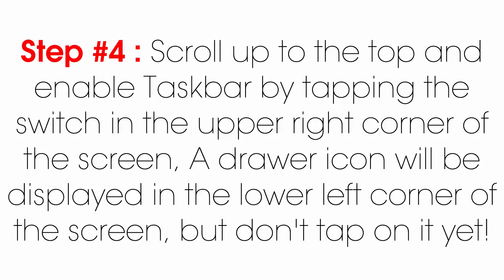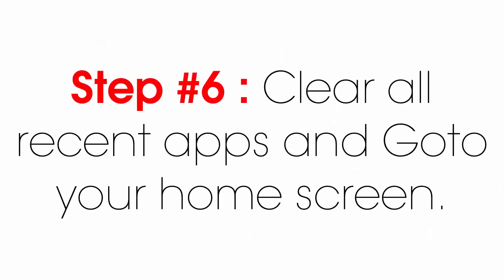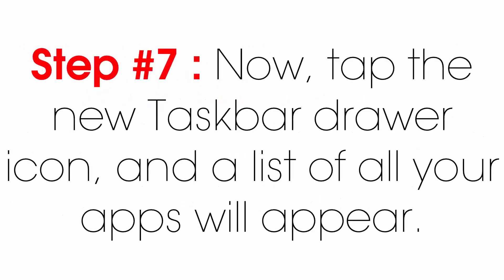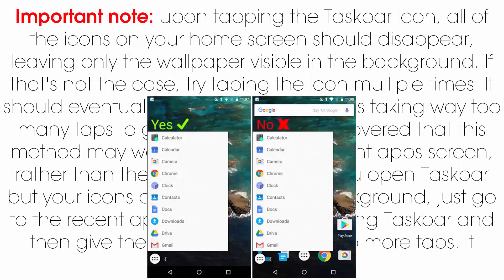A drawer icon will be displayed in the lower left corner of the screen, but don't tap on it yet. Step six: clear all recent apps and go to your home screen. Step seven: now tap the new Taskbar drawer icon and a list of all your apps will appear. Upon tapping the Taskbar icon, all of the icons on your home screen should disappear, leaving only the wallpaper visible in the background.